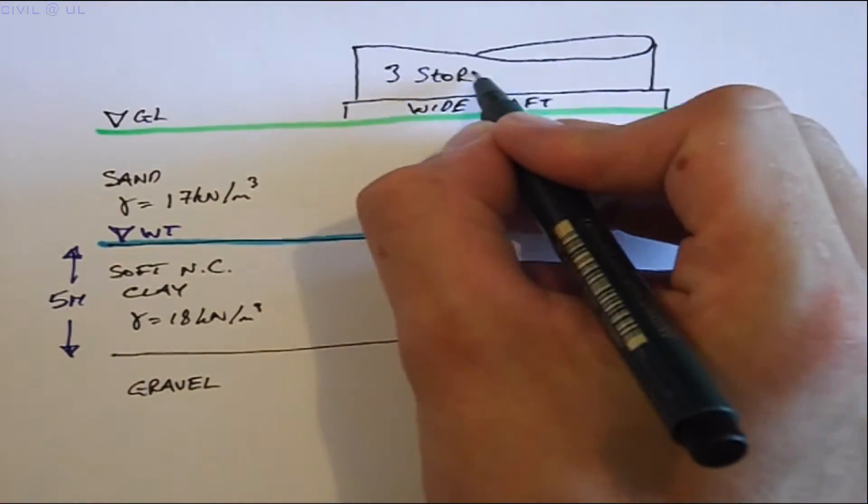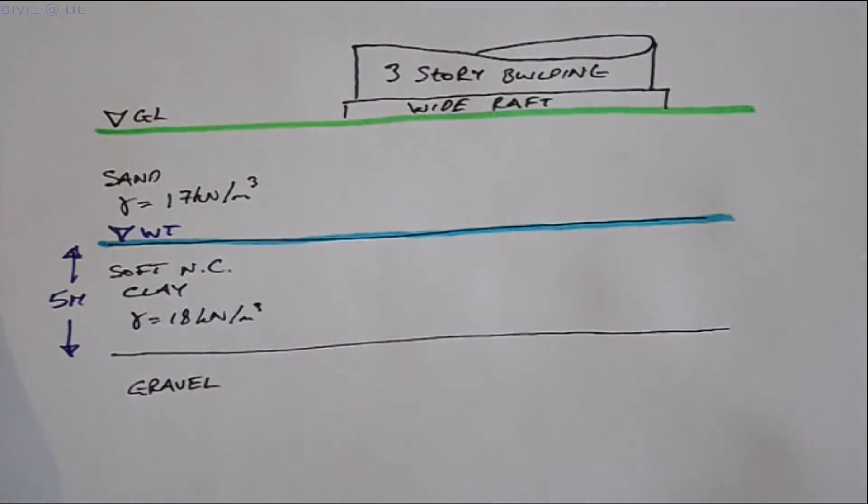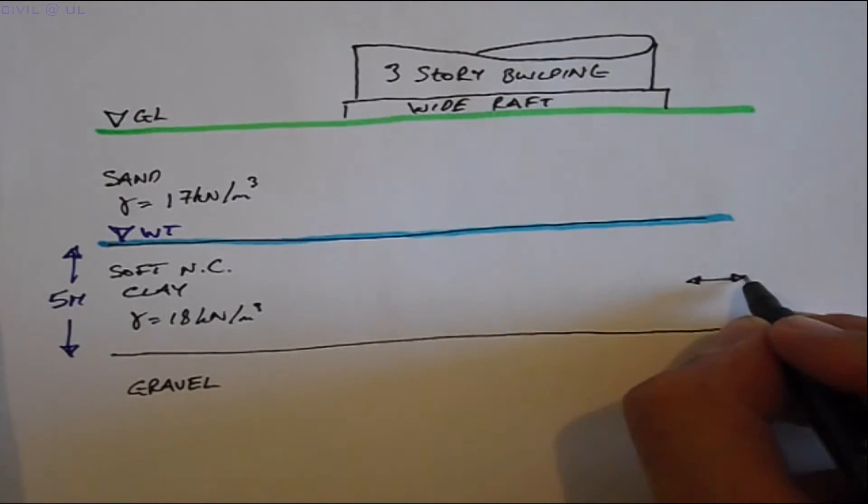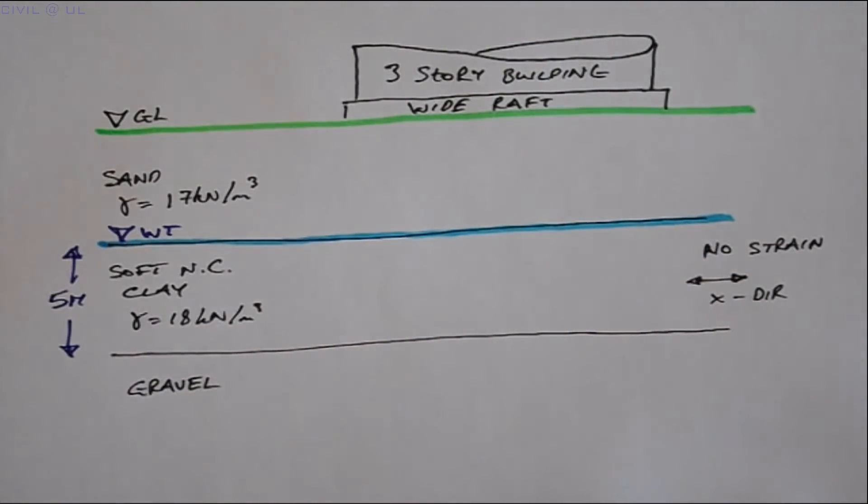The water table is located here, and the architect wants to construct a three-story building on top of a raft foundation. The size of the raft is such that the loading can be considered as one-dimensional—that is, there is no strain in the x-direction. This assumption holds true except for the ends of the raft.